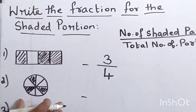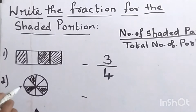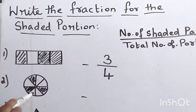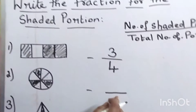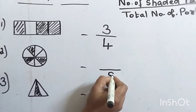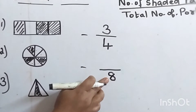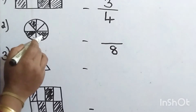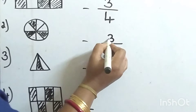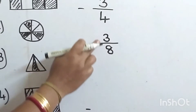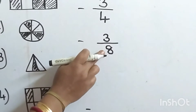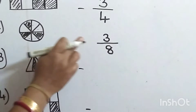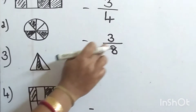See the next one. Let's count the total number of parts: one, two, three, four, five, six, seven, eight. Total parts are eight — write that at the bottom as the denominator. Now count the shaded parts: one, two, three. Three parts are shaded. So the fraction is three by eight — number of shaded parts divided by total number of parts.